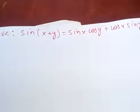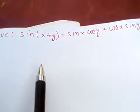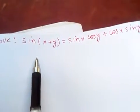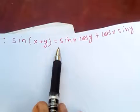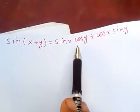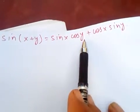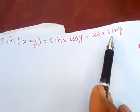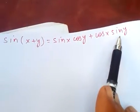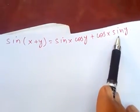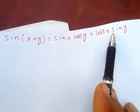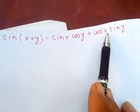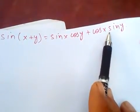Hi friends, today I'm going to prove two trigonometric identities: sine of x plus y equals sine of x cos of y plus cos of x sine of y. I'm going to prove this by using Euler's formula.